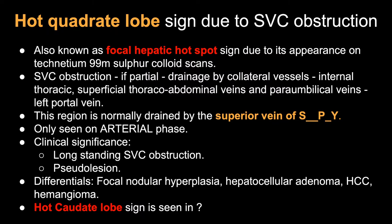The paraumbilical veins have a specific name — they are known as the paraumbilical vein of Sappey, S-A-P-P-E-Y. That's the vein that drains that portion of the liver normally, and that gives rise to this sign. This is only seen on the arterial phase.